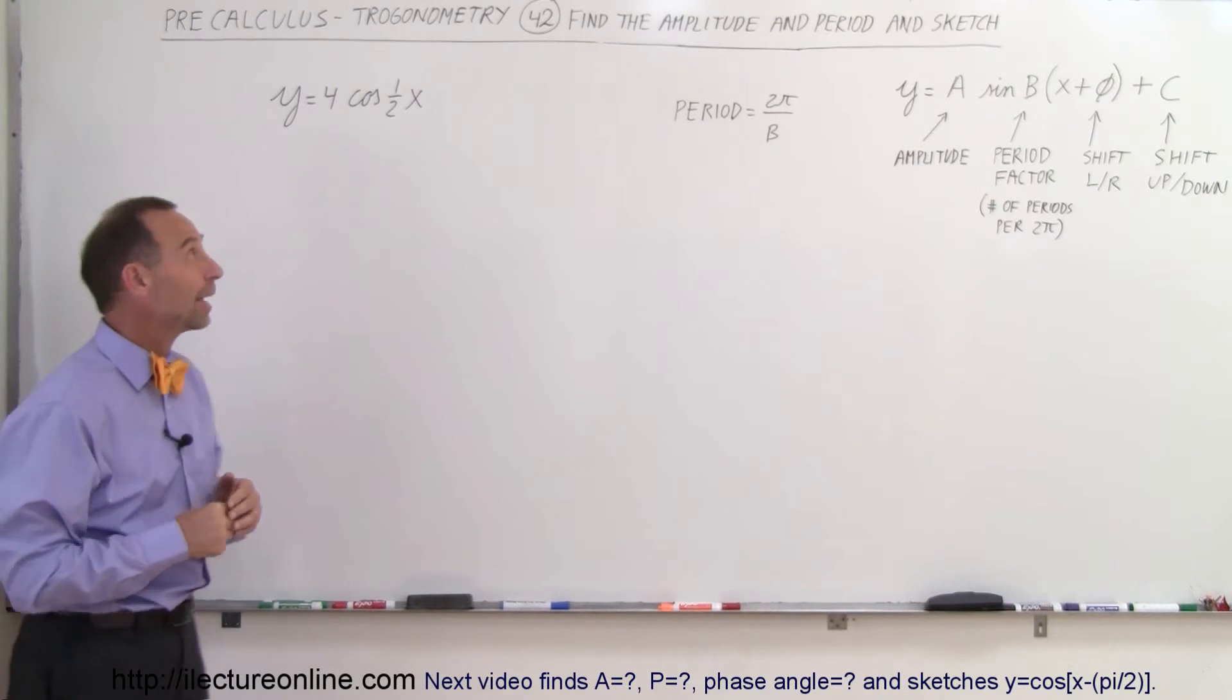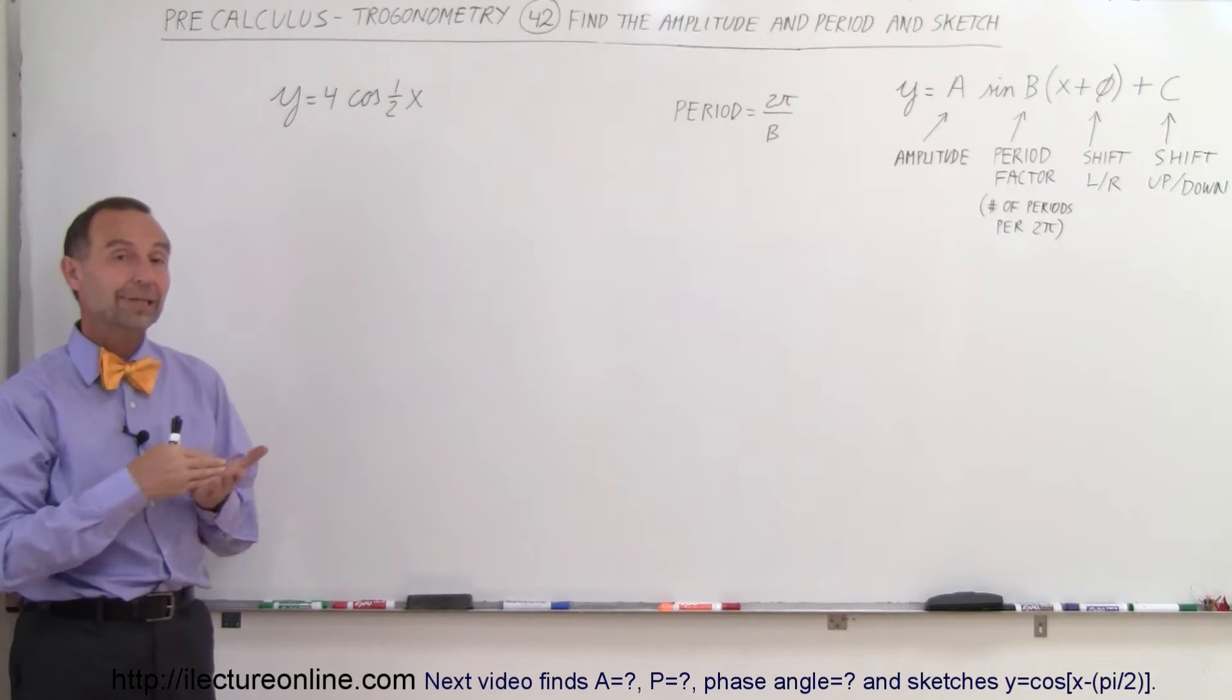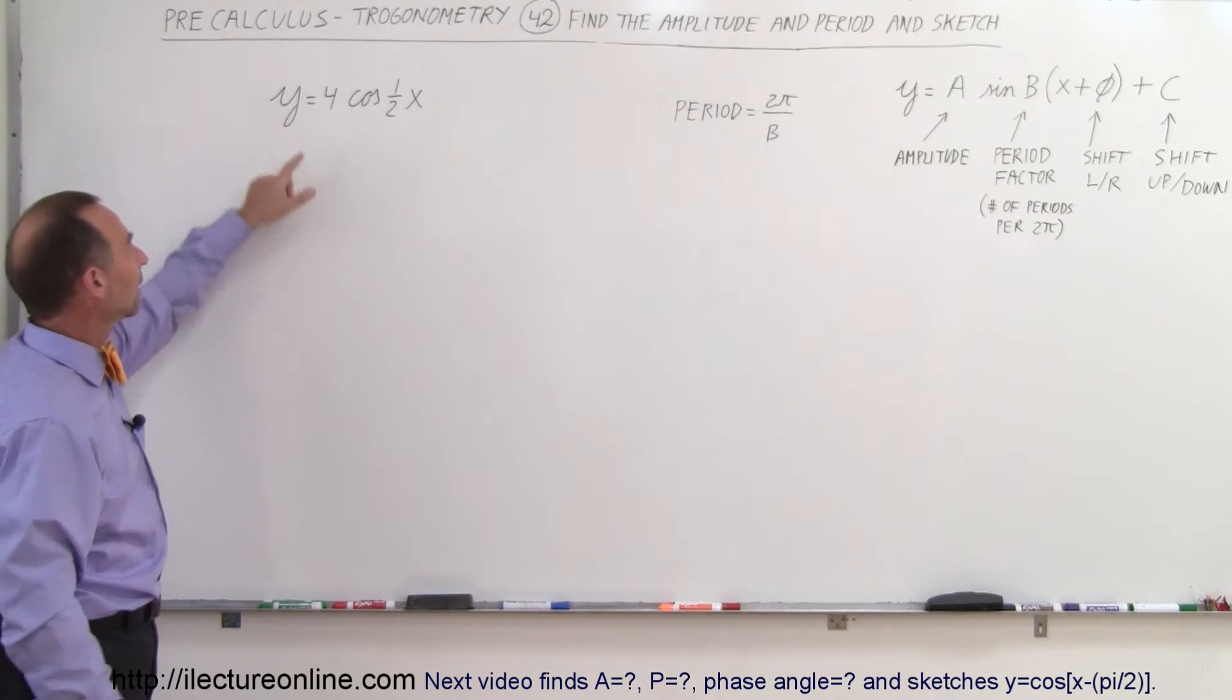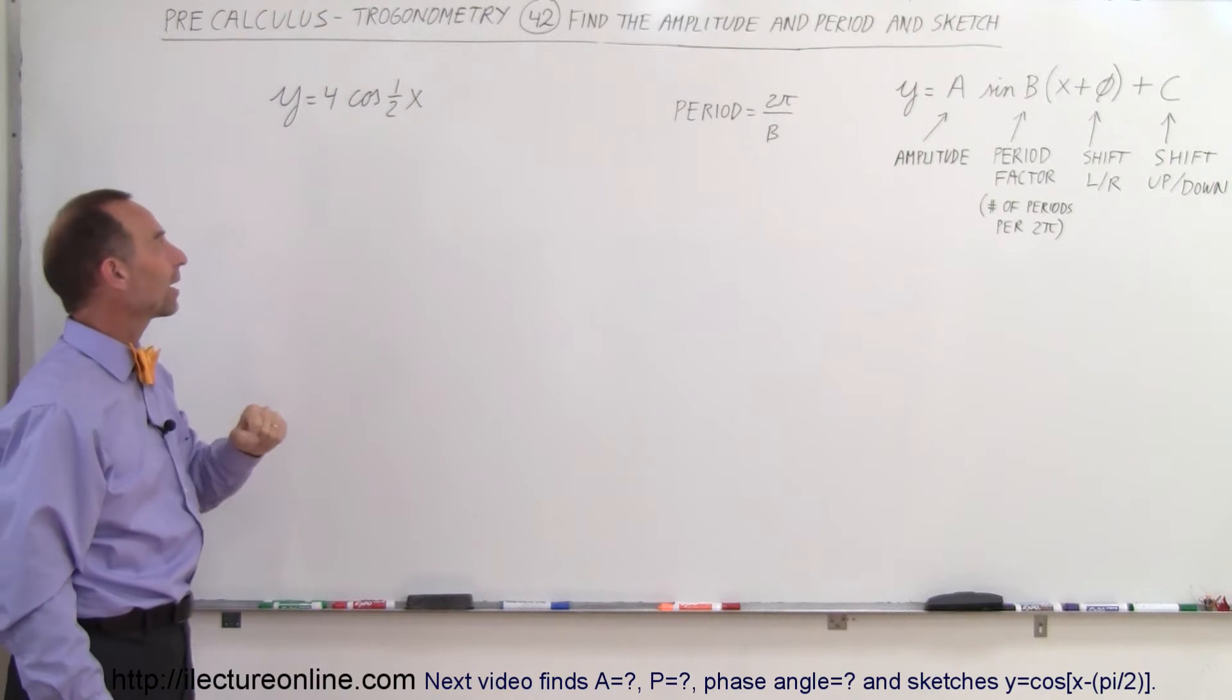Welcome to our lecture online and here again we're supposed to find the amplitude, the period and then sketch this function. Here it says y equals 4 times the cosine of 1 half x.